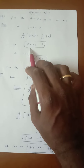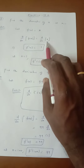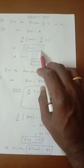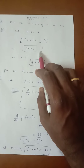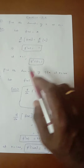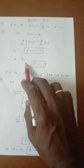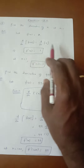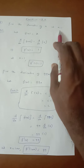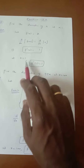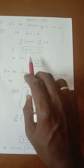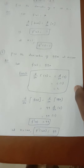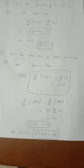d by dx of x can be taken as 1. At the point x equal to 1, which is already given, we apply x equal to 1, so f dash of 1 equal to 1. This is the answer.